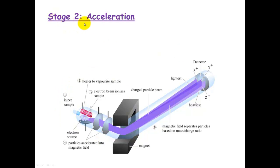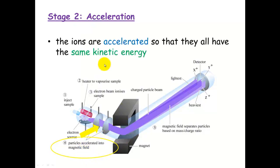The second stage is called acceleration. It's exactly what the name means. These particles are accelerated into this magnetic field, so they're just basically sped up so that they've all got the same amount of kinetic energy. So they're all traveling at the same speed.